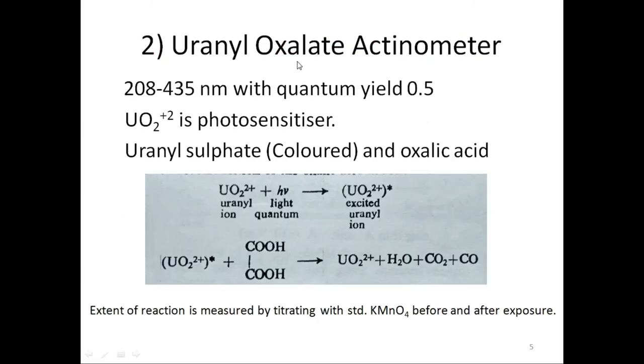The second actinometer is uranyl oxalate actinometer. It works in a wavelength range of 208 to 435 nanometers with an average quantum yield of 0.5. Here, UO2+2 uranyl ion acts as a photosensitizer. In this actinometer, a solution of uranyl sulfate and oxalic acid is used. Light absorbed by the colored uranyl ion causes the decomposition of oxalic acid as shown in the reaction.